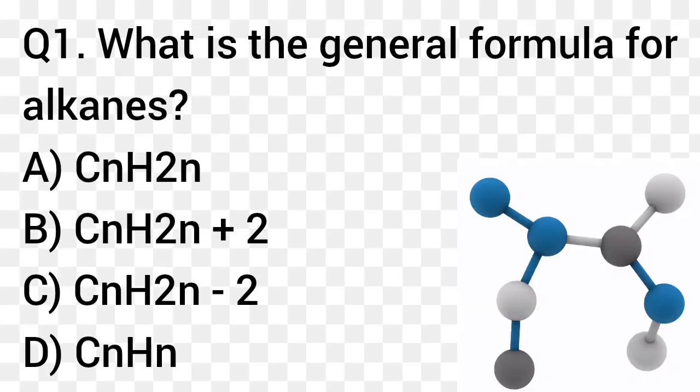Question number 1. What is the general formula for alkanes? Option A: CnH2N. Option B: CnH2N plus 2. Option C: CnH2N minus 2. Option D: CnH2N. The right answer is option B, CnH2N plus 2.